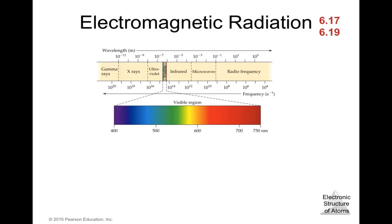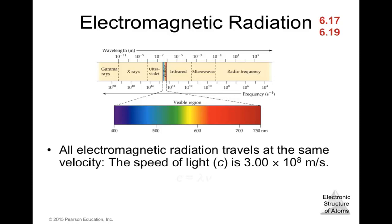All electromagnetic radiation travels at the same velocity — the speed of light, c, which is 3 × 10⁸ meters per second. The equation is: the speed of light equals lambda times frequency, c = λν. That's why they're inversely related — because the speed of light is always constant, if you increase wavelength, frequency must decrease, and vice versa.